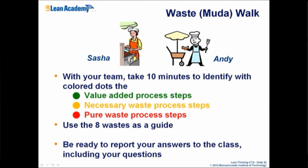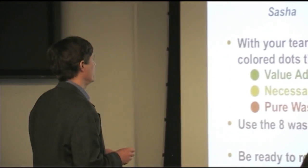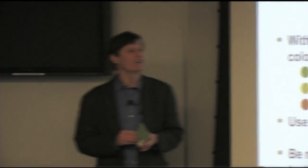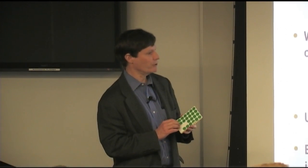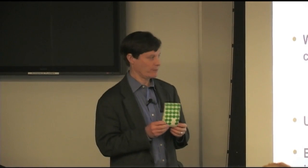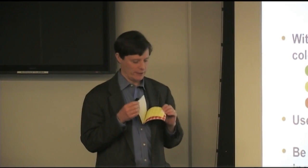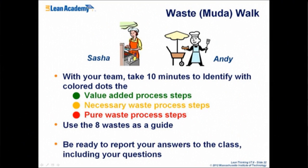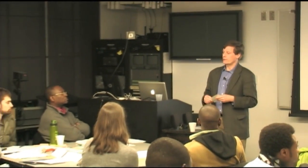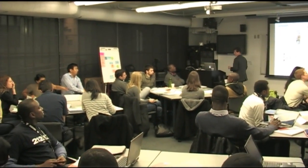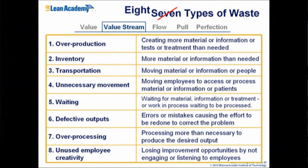We're going to do a quick exercise in waste walking. I've handed out some dots. We're going to look at our map and decide if each one of the steps and decisions — don't bother with the waits because we're pretty sure those are non-value-added — are they value-added (green, does something for the customer), necessary waste (we've got to do them, but they don't really help the customer, but health board or regulations require it), or pure waste (something we should try to get rid of)? There's no right answer. Take about five minutes as a group, think about these issues against the process map you've already done.